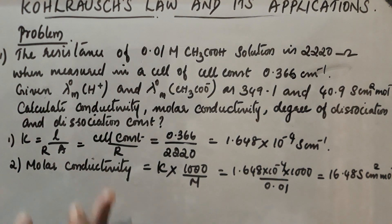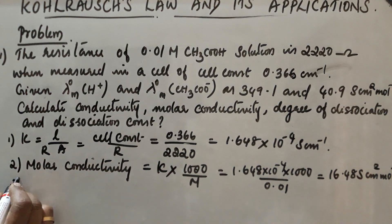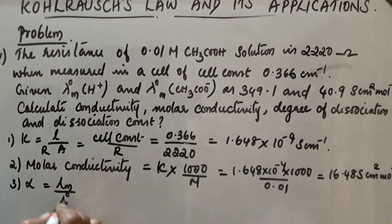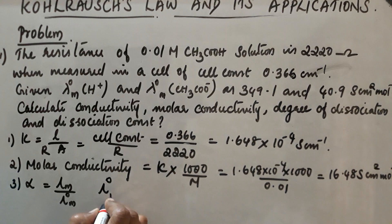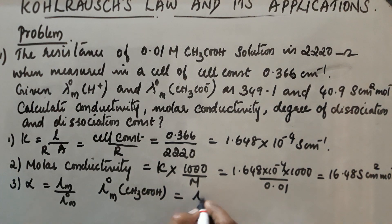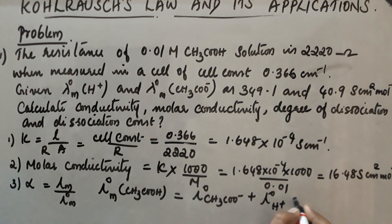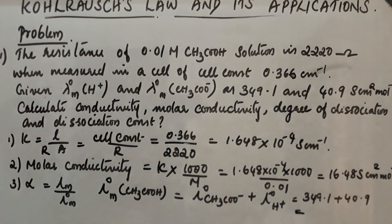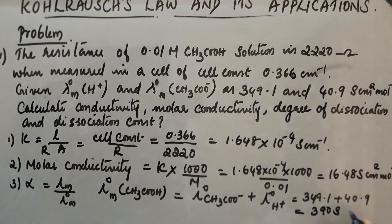Now, the limiting molar conductivity values are given. By Kohlrausch's Law, λ°(CH₃COOH) = λ°(CH₃COO⁻) + λ°(H⁺) = 40.9 + 349.1 = 390 S·cm²·mol⁻¹.